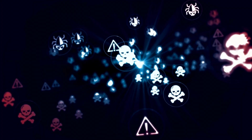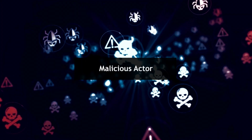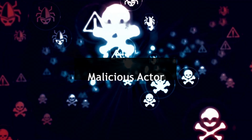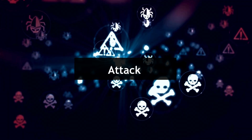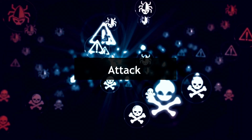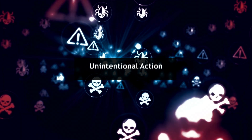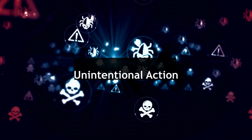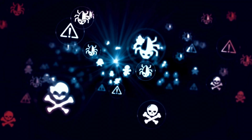A threat can be an entity like a malicious insider, ransomware gang, or nation state; an attack like malware, phishing, or DDoS; or even an unintentional action like accidentally deleting or exposing sensitive information. In CTI, you typically focus on groups, attacks, and vulnerabilities as threats that you want to track and mitigate.